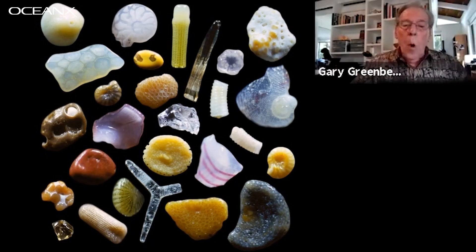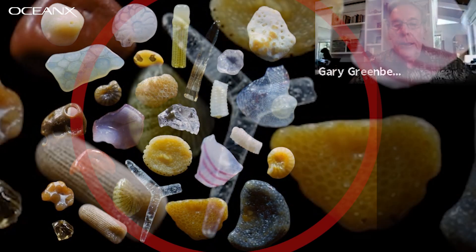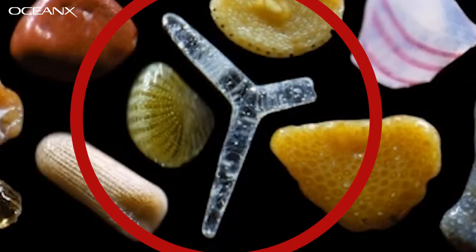That Y-shaped thing at the very bottom — that's a really interesting thing. That's a glassy sponge spicule. The sponge spicule is the internal skeleton of a sponge.